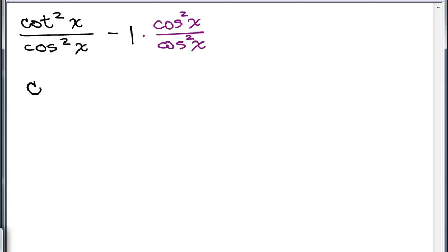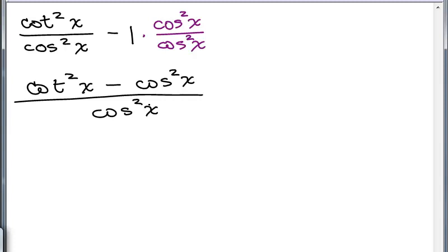So that would give us cotangent squared x minus cosine squared x over the cosine squared x. I can't think of any identity that involves both cotangent squared x and cosine squared x. So therefore, I'm thinking this isn't going to make it any easier.